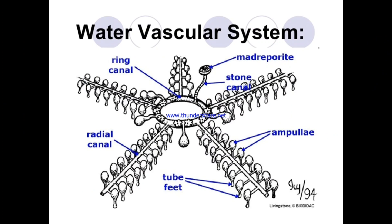The system through which all physiological processes are carried out is known as the water vascular system, otherwise called the ambulacral system. Water enters the body through the madriporite, then goes to the stone canal, then the ring canal, then the radial canal, then the lateral canal, then to the ampullae, and water goes out through the tube feet.